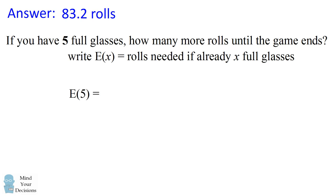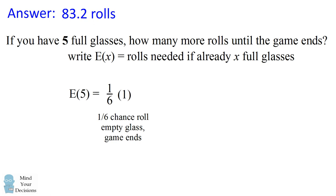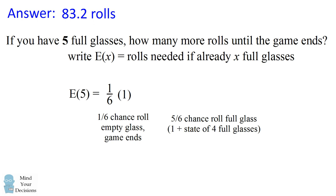There are two things that can happen when we roll the dice. There's a 1/6 chance we're going to get the number for the empty glass, at which point the game ends — so there's a 1/6 chance the game ends in one turn. However, there's a 5/6 chance we roll a number for one of the glasses that's already full, so we drink it and end up in the state of 4 full glasses. In 5/6 of cases it takes one turn to reach 4 full glasses.